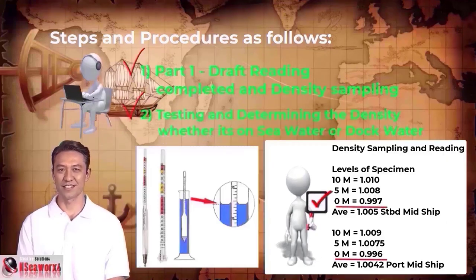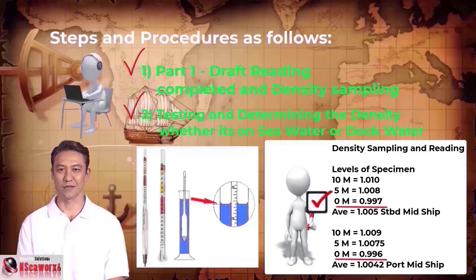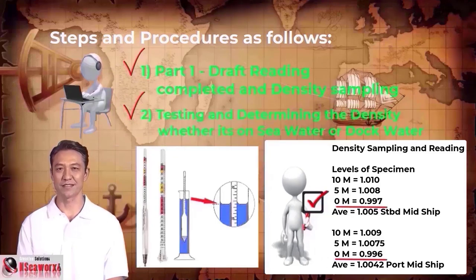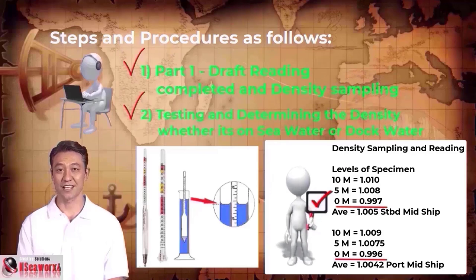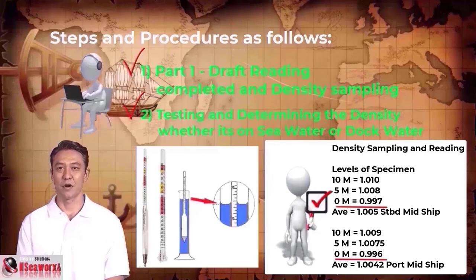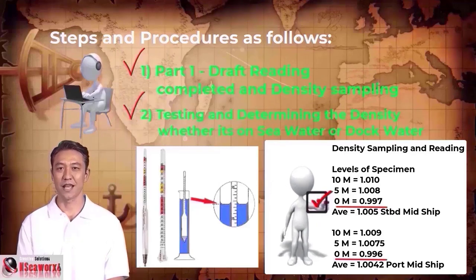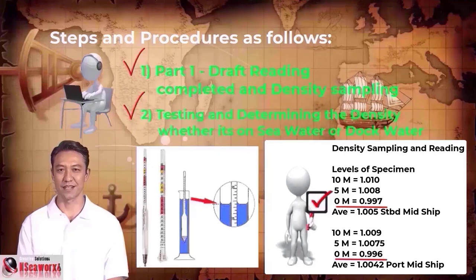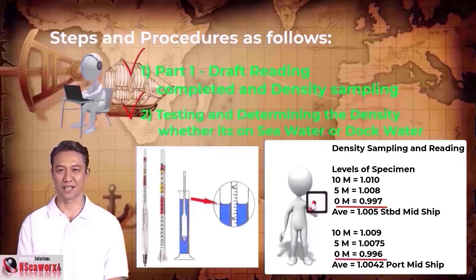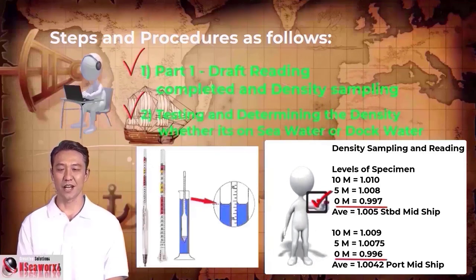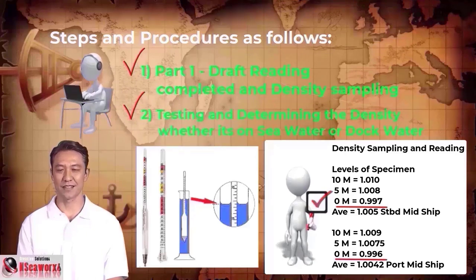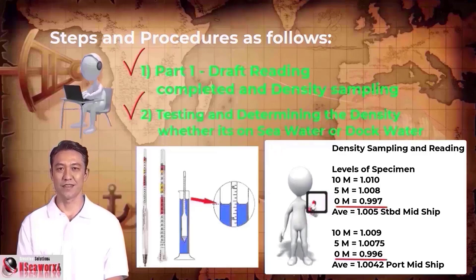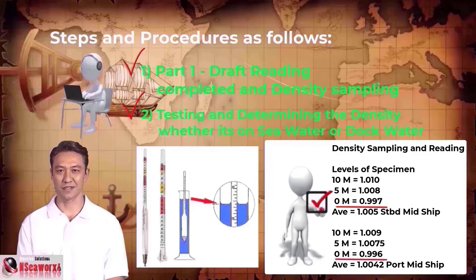Step 2: testing and determining the density — whether it's in seawater or dock water — is quite important. In most cases we take different depths of water on each side of the vessel just to make sure, and get the average of these densities, because the density at the shallow part may differ from deeper water where the vessel is submerged. So we take the average of such.